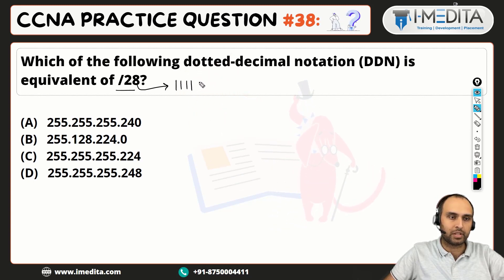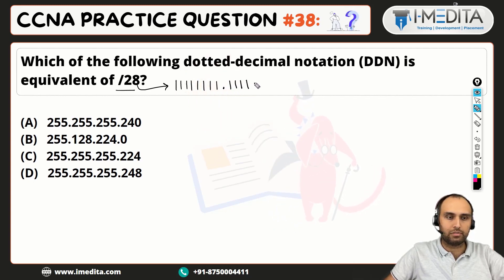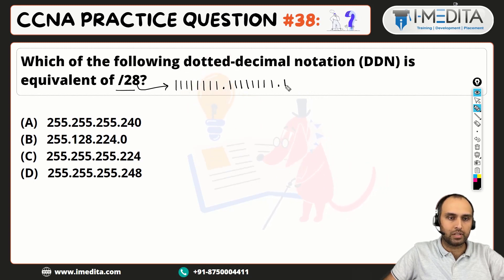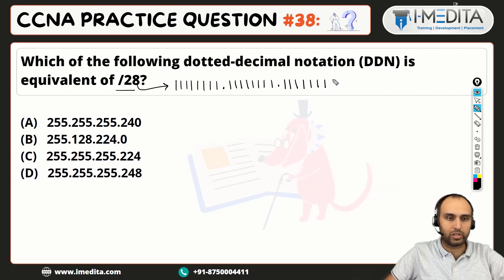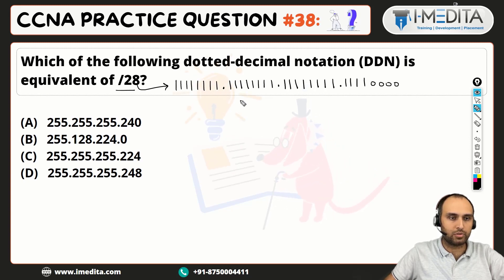So if we count out 28 ones in the subnet mask — 1, 2, 3, 4, 5, 6, 7, 8, 9, 10, 11, 12, 13, 14, 15, 16, 17, 18, 19, 20, 21, 22, 23, 24, 25, 26, 27, 28 — and then the rest of them are zeros.